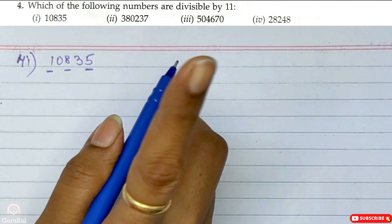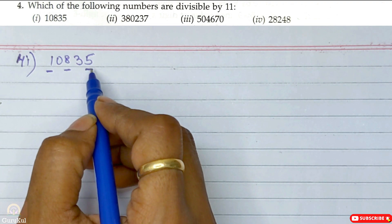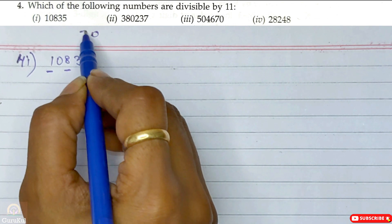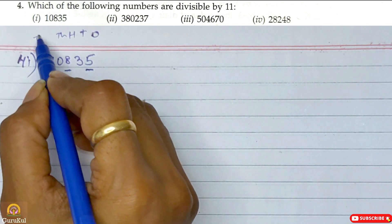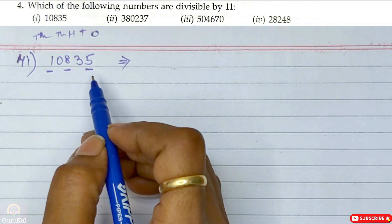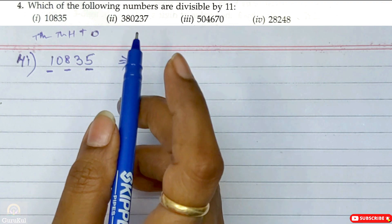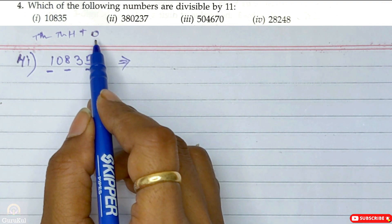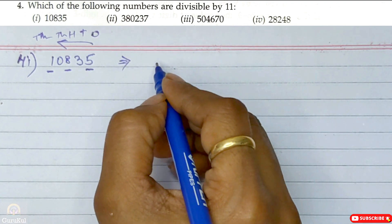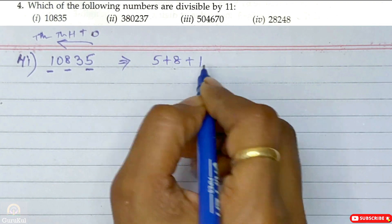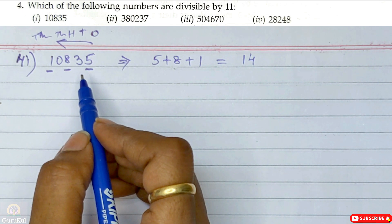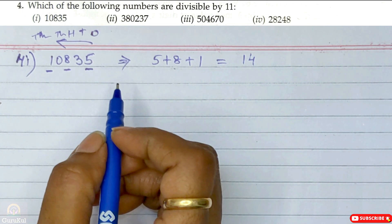The odd place starts from the unit place. For the number 10835, the digits at odd places starting from the unit place are 5, 8, and 1. Adding them: 5 plus 8 plus 1 gives us 14.